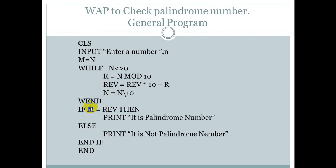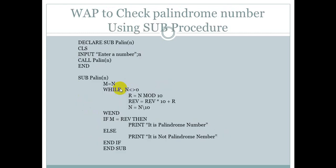If the original number M is equals to REV, the reverse number, then it is a palindrome; else it is not a palindrome. We store the original value of N into variable M because the value of N is changing inside the loop, so we need M to retain the original number.